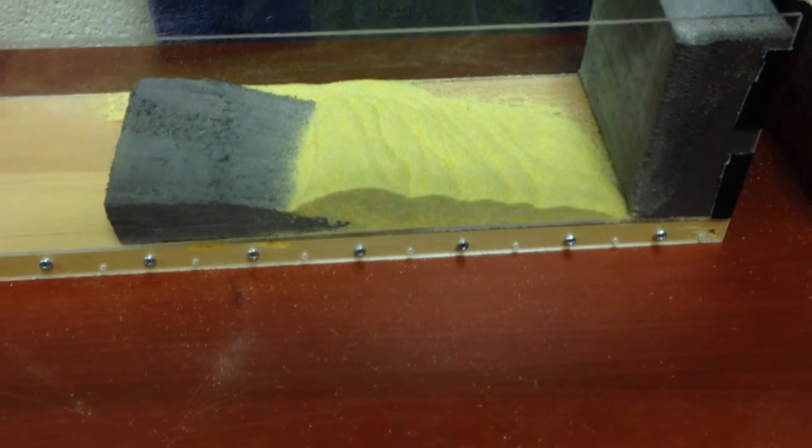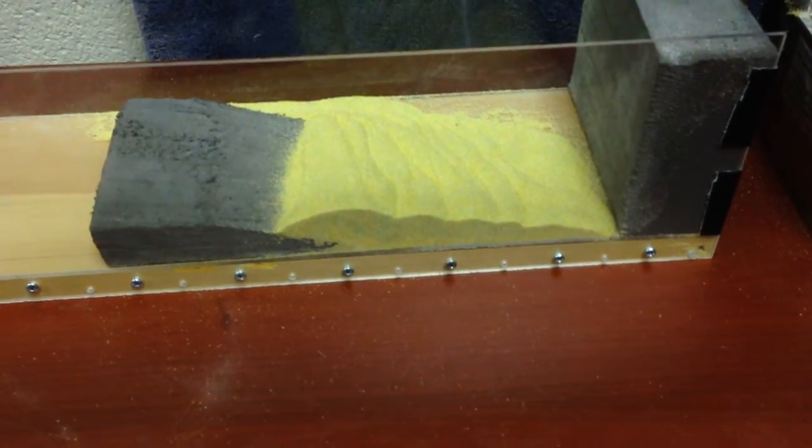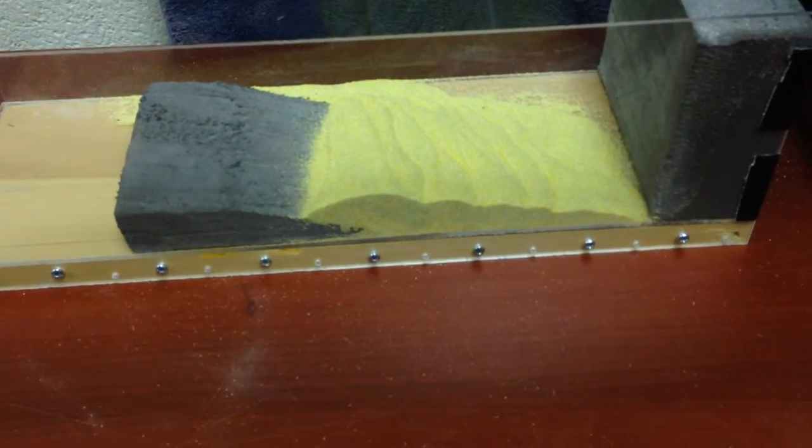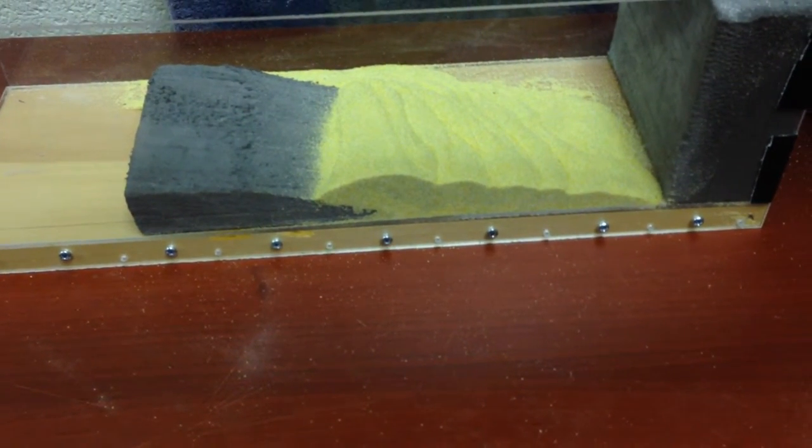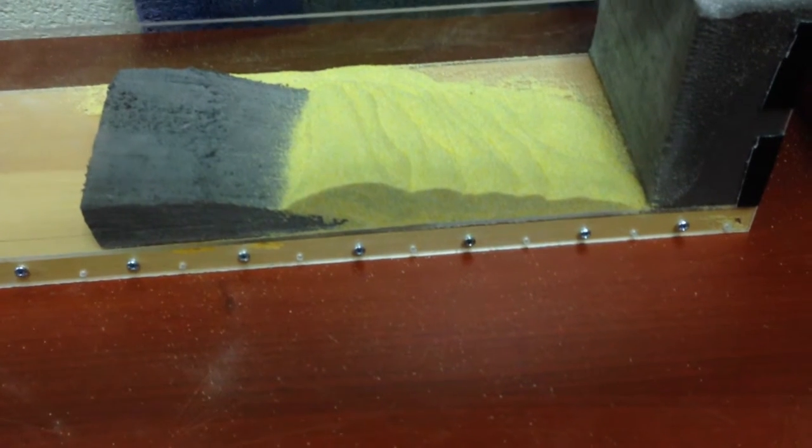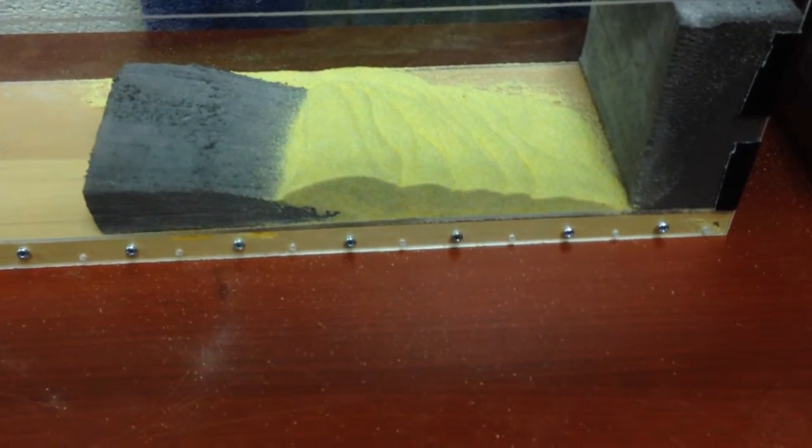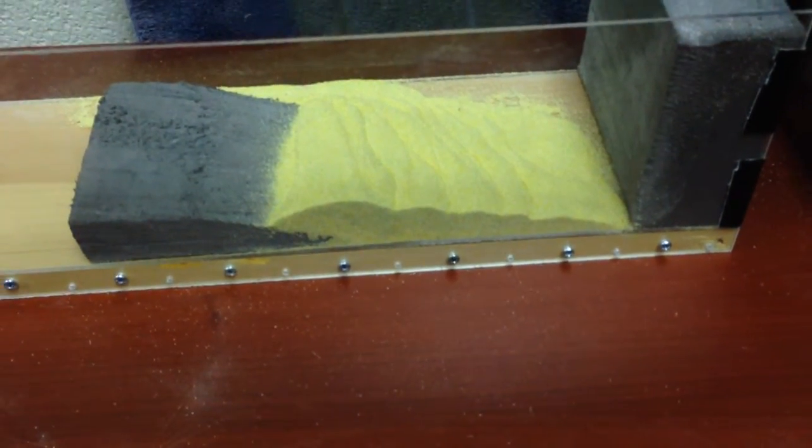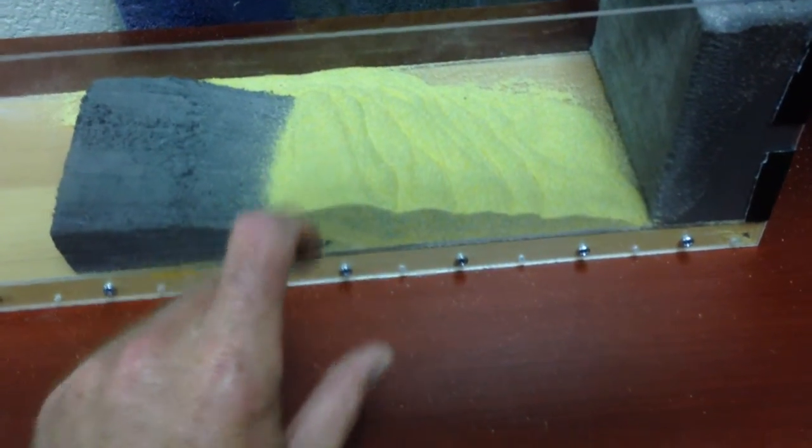Certainly a fundamental aspect of fold thrust belts and indeed low angle thrust faulting the world over is the fact that large masses of rock slide along basal detachments in geometry, something like you see here essentially very broad but very thin.